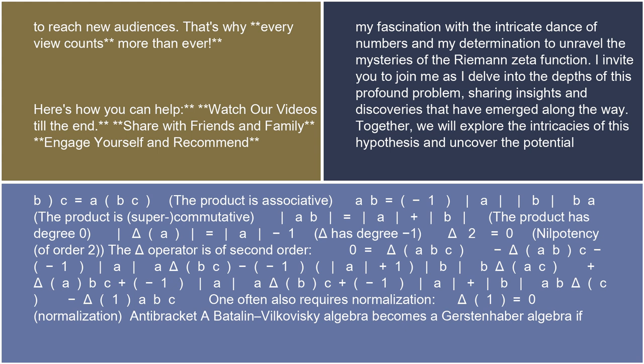The delta operator is of second order: 0 = delta(ABC) − delta(AB)C − (−1)^|A| A·delta(B)·C − (−1)^|A| A·delta(B)·C − (−1)^(|A|+1)|B| delta(AC) + delta(A)BC + (−1)^|A| delta(B)·C + (−1)^(|A|+|B|) AB·delta(C) − delta(1)ABC. Normalization often also requires delta(1) = 0.